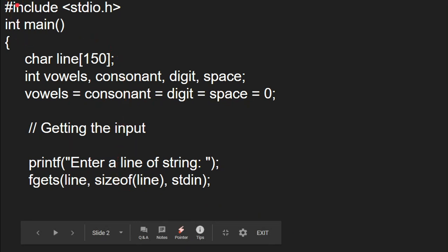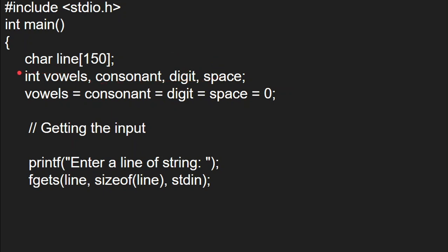As usual it starts with #include stdio.h and int main with an open brace. We are declaring a variable called 'line' as a character array with a size of 150, to hold a line of characters. Then we declare integer variables: vowel, consonant, digit, and space, and initialize all of them to 0 because initially there are no vowels, consonants, digits or spaces counted.